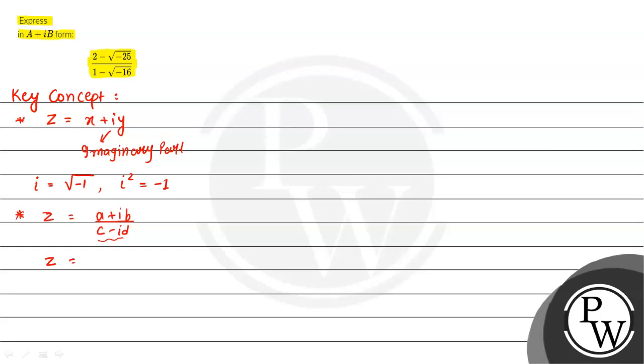So, if it is c minus id in denominator, then we will multiply c plus id to numerator and denominator.